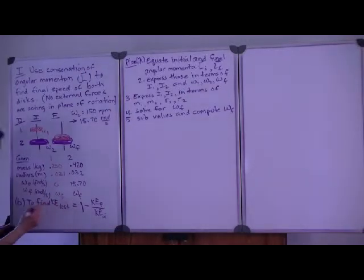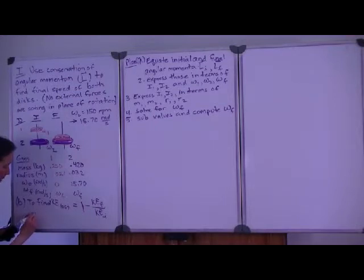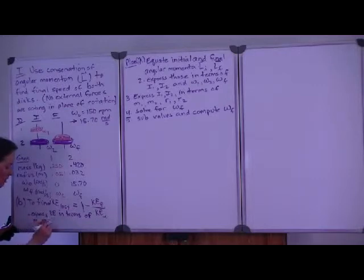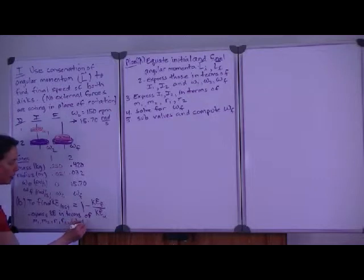And so to do that we'll need to express kinetic energy in terms of things that we know, very similar to part 1. So eventually we have to get to mass 1, mass 2, radius 1, radius 2, and the initial speeds and final speed.